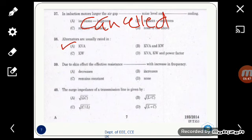Then, due to skin effect, the effective resistance dash with the increase in frequency? We know that due to skin effect, the effective area of a conductor reduces. When area reduces, we know that the resistance increases. So option B, that is question 39, option B, that is resistance increases.